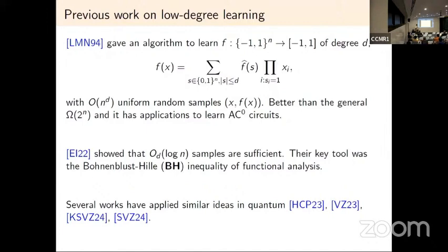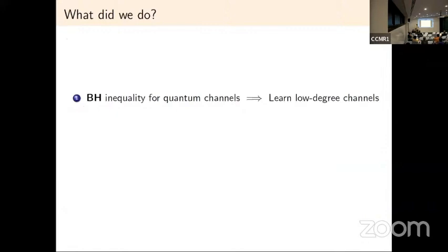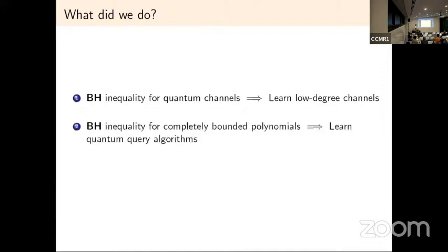For example, in the preceding talk, Joe explained how you can use Bonami-Beckner inequalities to learn low-degree observables. There are also works by Chen and Preskill, and by the group of Keller, Slote, Volver, and Sange — all focusing on learning observables. What we did was extend these ideas of Bonami-Beckner inequality and low-degree learning to other quantum objects, which required proving new Bonami-Beckner inequalities. We highlight two results: a Bonami-Beckner inequality for quantum channels enabling low-degree channel learning, and one for completely bounded polynomials enabling learning of quantum query algorithms.